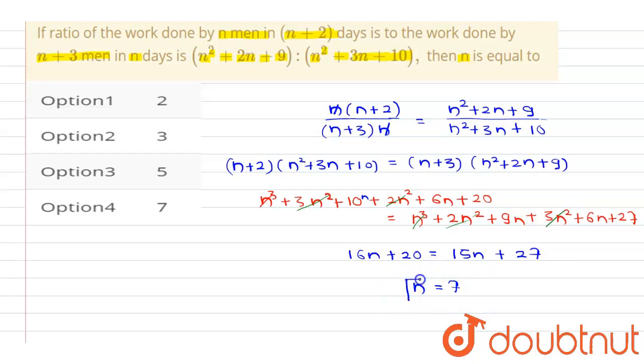Therefore, the value of n is equal to 7, which is option D. Option D is correct.